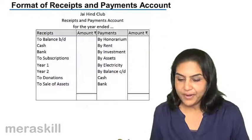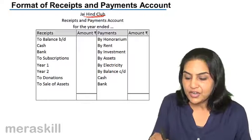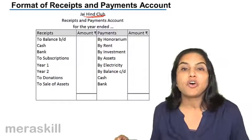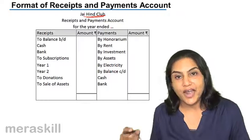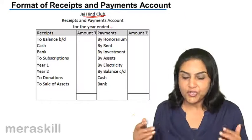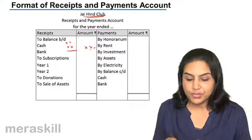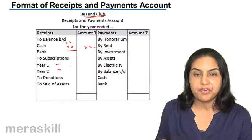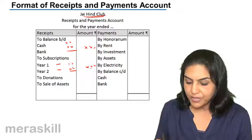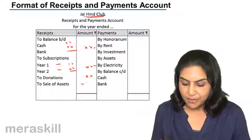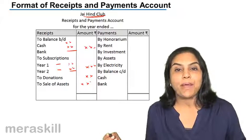Let us look at the format of a receipts and payments account. It shows the name of the organization and is titled 'Receipts and Payments Account for the year,' covering all cash inflows and outflows throughout the year. It begins with the opening balance, then lists receipts such as subscriptions — maybe for the current year or the next year — the total amount received from donations, and proceeds from selling assets.